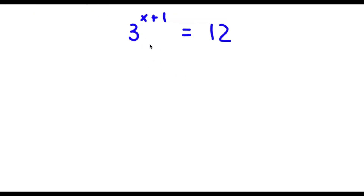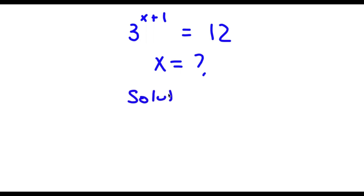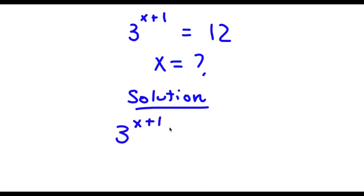So I have 3 to the power of x plus 1 is equal to 12. I'm going to find the value of x here. For my solution, first start with 3 to the power of x plus 1 is equal to 12.